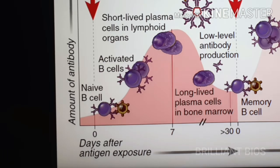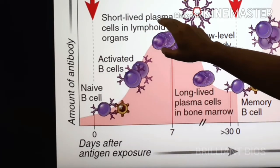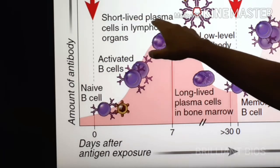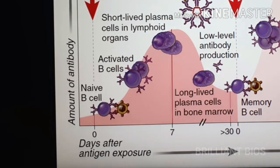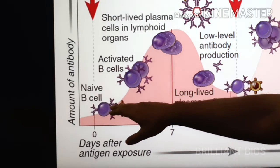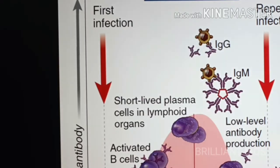After recognizing the pathogen or antigen, the cell becomes activated and is called an effector cell. In the case of B cells, the effector cell is called a plasma cell — these are short-lived plasma cells in lymphoid organs. Plasma cells are B cells that can secrete antibody. T cells can also be activated in this process.